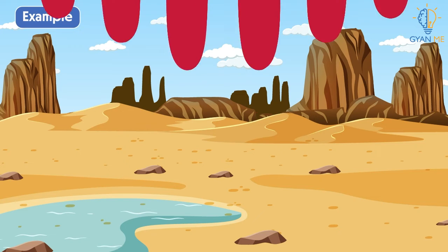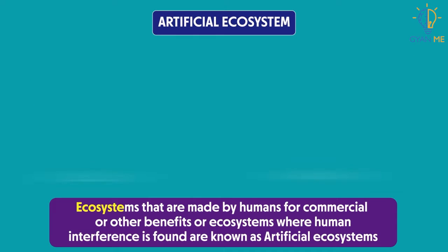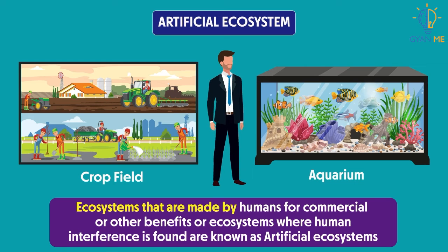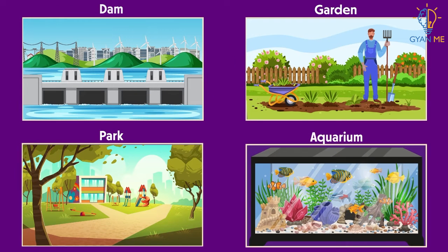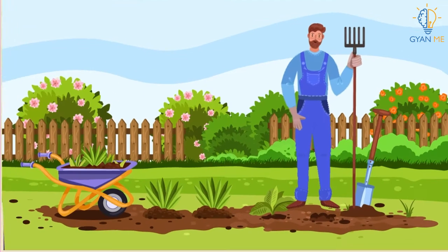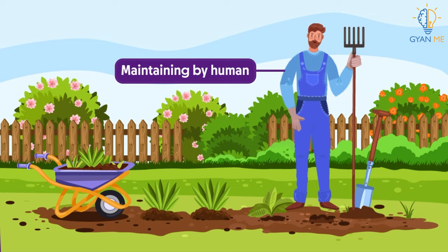Now let us see artificial ecosystem. Ecosystems that are made by humans for their commercial or other benefits — or we can say ecosystems where human interference is found — are known as artificial ecosystems. These ecosystems are modified by humans for their own profit. For example, dams, gardens, parks, aquariums, etc. These are created and maintained by humans for their own benefits or modified for their profits.